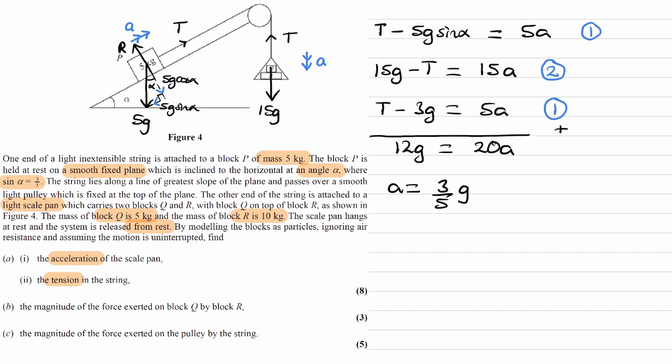So, that's the acceleration and then the tension. We just rearrange. I'll rearrange equation 1. So, tension is equal to 5A plus 3G. That's the same thing as 5 times the acceleration 3 fifths of G plus 3G, which is 3G plus 3G. And that is 6G. So, the 5s here just cancelled. Hence why this term became 3G.